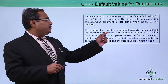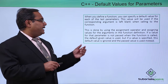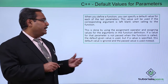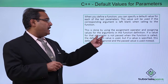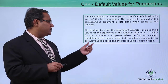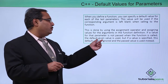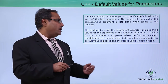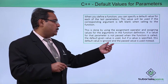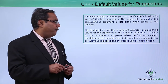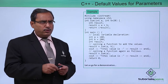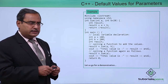This is done by using the assignment operator and assigning values for the arguments in the function definition. If a value for that parameter is not passed when the function is called, then the default value is used. But if a value is specified, this default value is ignored and the passed value will be used accordingly.